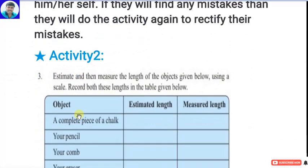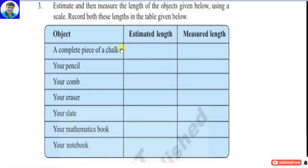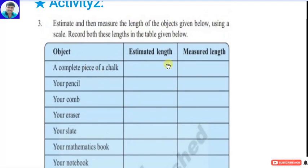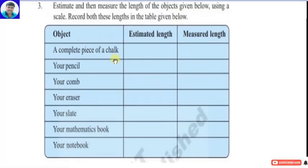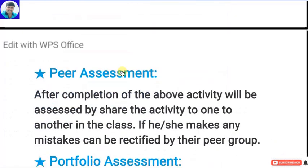Activity 2: estimate and then measure the length of the objects given below using a scale; record both lengths in the table given below. Some objects are listed with columns for estimated length and measured length. The children estimate the lengths and write them, then measure with a scale. The assessment strategy used here is peer assessment.